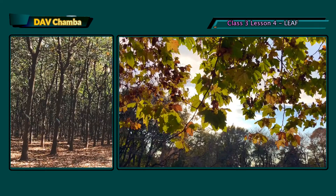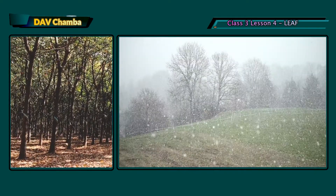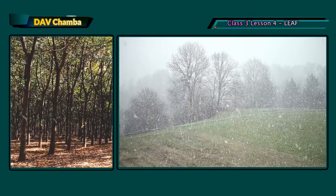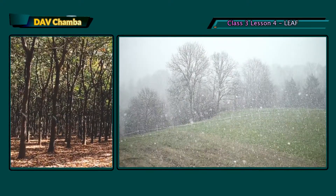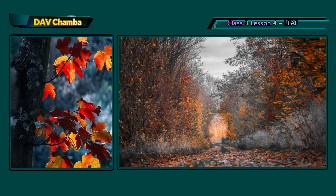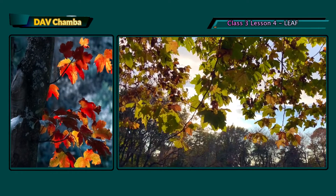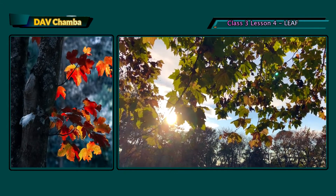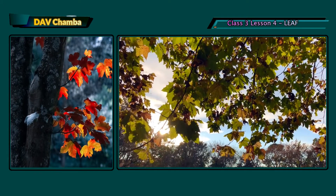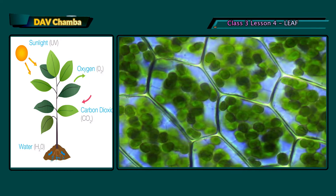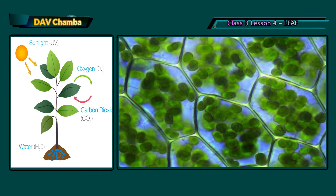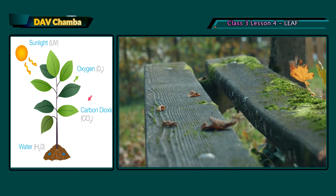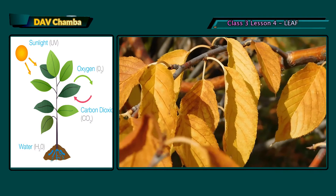Many types of trees shed their leaves as a strategy to survive harsh weather conditions. In autumn season, when it starts to get cold, some plants stop making chlorophyll due to the short length of daylight. When the leaves stop their food-making process, the chlorophyll breaks down, the green color disappears, and yellow or orange colors become visible.